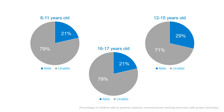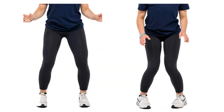To determine just how much movement quality is an issue among children, my team completed a research study where we observed how a group of nearly 500 children performed several common exercises. Unfortunately, we found that only 21% of children between 8 and 11 years old, 29% of children between the ages of 12 and 15, and 21% of 16 and 17-year-old children were able to perform common exercises like squats, planks, and jumps with proper technique. The inability to perform these activities with proper technique is an injury risk factor that can be changed with proper education and training.